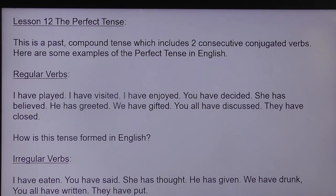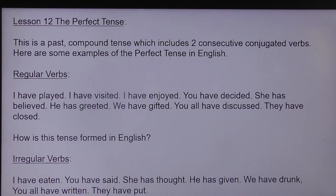The perfect tense is a type of past tense and it's a compound tense. A compound is made up of more than one thing, more than one item. It's actually made up of two consecutive conjugated verbs, which I'm going to show you examples of in a minute, because that actually sounds quite complicated. So in English, here are some examples of what a perfect tense sounds like, choosing some regular verbs.